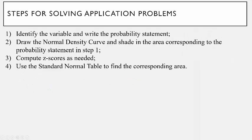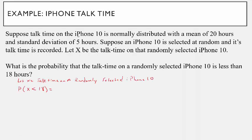The next thing you need to do — and I highly suggest this — is draw the normal density curve and shade in the area corresponding to the probability statement in step one. I know that talk time follows a normal distribution. On average they get 20 hours, and I want less than 18. So I'm going to shade the area to the left.